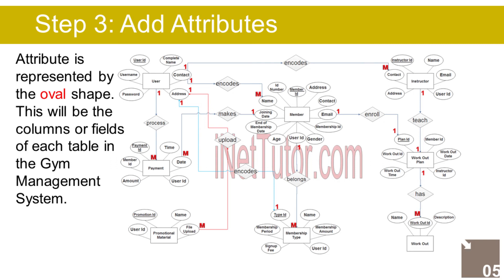The Membership Type entity has the following attributes: Type ID (Primary Key, represented with underline), name, membership amount, membership period, sign up fee, User ID (Foreign Key).